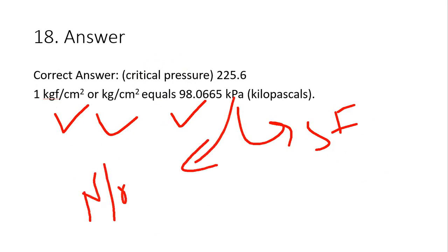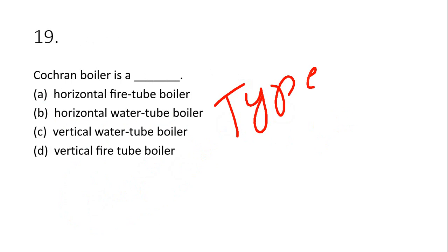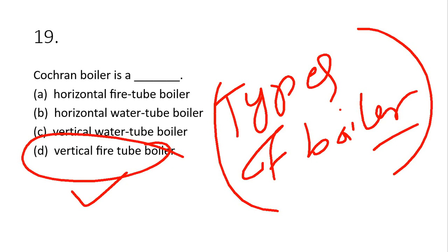Question 19 is about the Cochrane boiler. For any competitive examination, you must study types of boilers — at least one question appears in exams like SSC JE and other competitive exams. The Cochrane boiler is a vertical fire tube boiler. Boilers are classified as horizontal/vertical and water tube/fire tube. Option D is the correct answer.